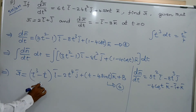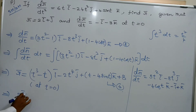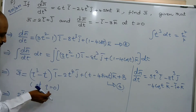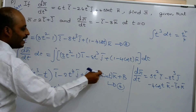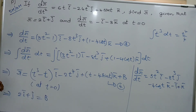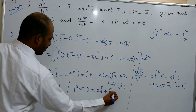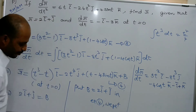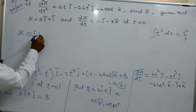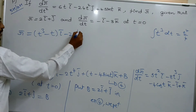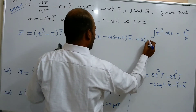At t equals 0, r̄ equals 2ī plus j̄ by given data. Putting t equals 0 in equation 4, every term becomes 0 since sin(0) is 0, so B equals 2ī plus j̄. Substituting B in equation 4: r̄ equals (t³ minus t)ī minus 2t⁴j̄ plus (t minus 4sin(t))k̄ plus 2ī plus j̄.